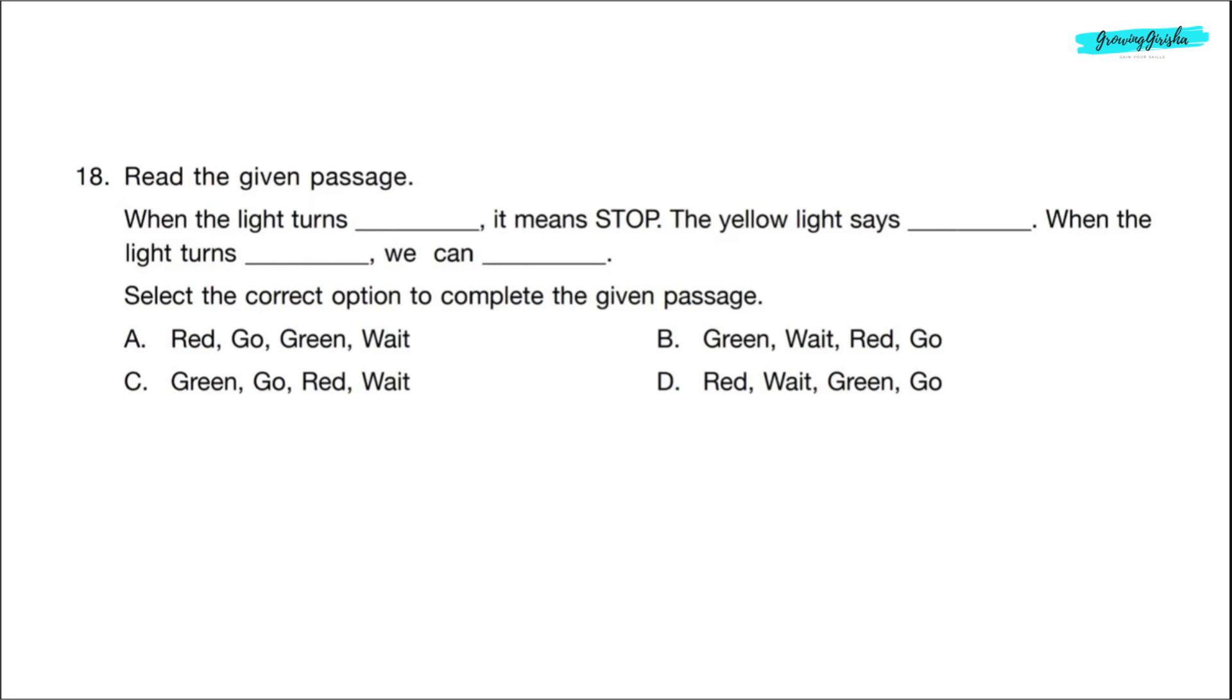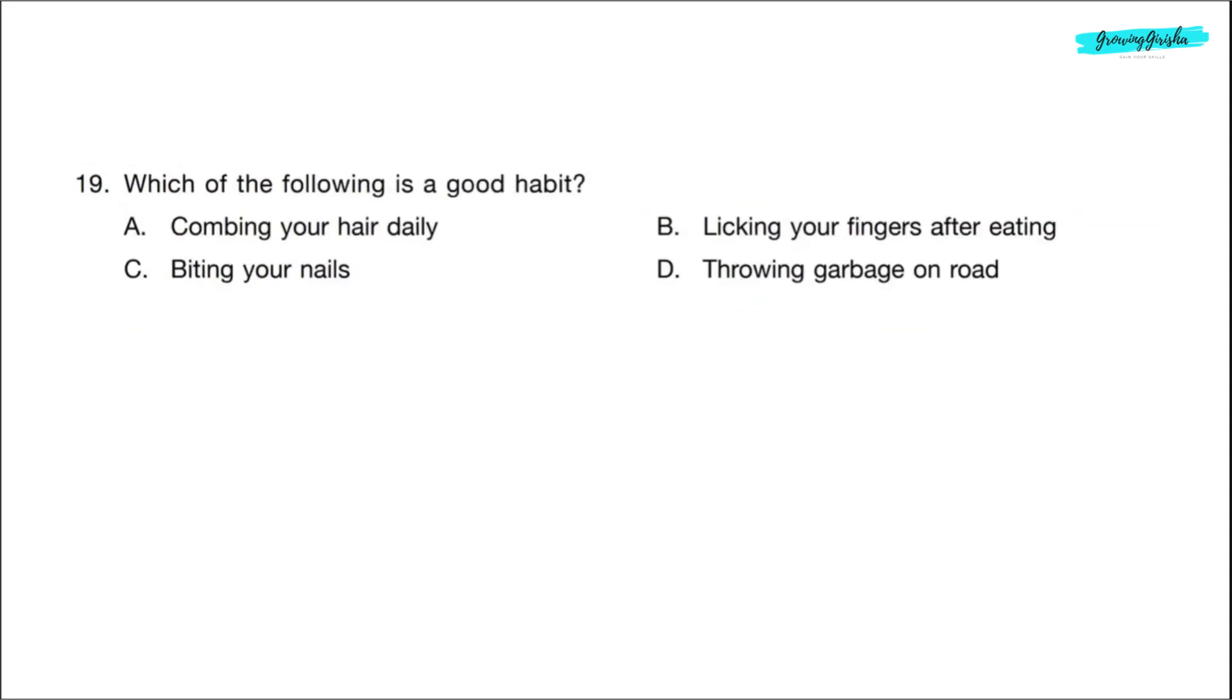Question 18. Read the given passage. When the light turns dash, it means stop. The yellow light says dash. When the light turns dash, we can dash. Select the correct option to complete the given passage. When the light turns red, it means stop. The yellow light says wait. When the light turns green, we can go. Correct answer is option D. Question 19. Which of the following is a good habit? Correct answer is option A. Combing your hair daily.